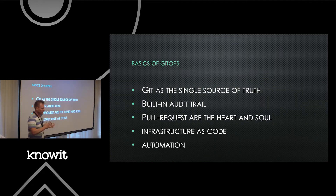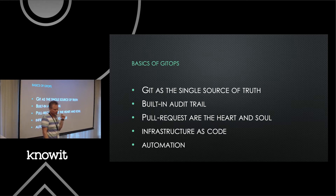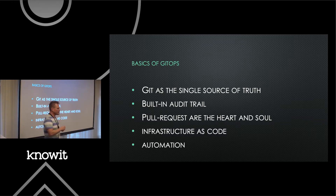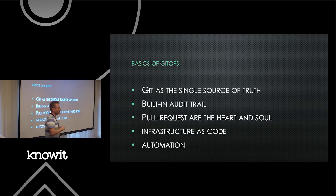What's the basic of GitOps? We have Git as a single source of truth. Everything we have, we put it in Git, and with that we get the built-in audit trail that comes with Git — we know what happened, when it happened, and who did it. Pull requests are the heart and soul of GitOps. Basically anyone can do an operation and a production change as long as you know how to open a pull request.